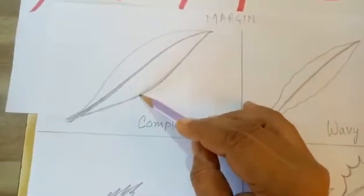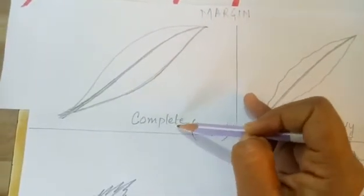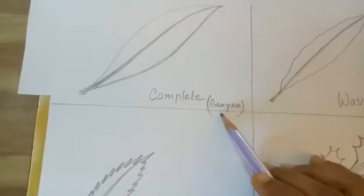So, there is no design on the margin. So, it will be called complete. Example, banyan.